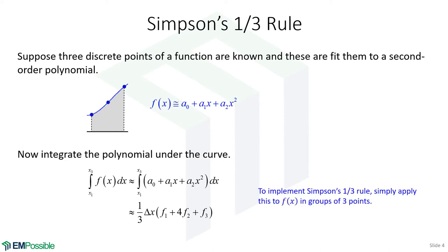So, to implement the method, we will have a series of points. Maybe the function has 100 discrete points. We will simply take it in groups of three, and then calculate the area under that group of three points using this equation. Then we would move to the next three points, and so on, and we work our way across. And I have an animation of that later, but that's how it works.